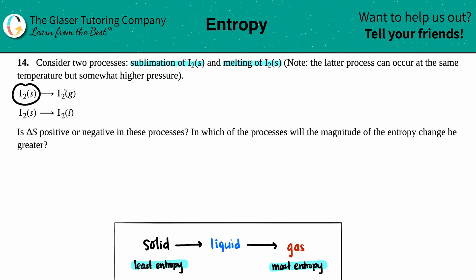Sublimation is when you're turning your I₂ solid into a gas. And then the bottom one is solid to liquid—that's melting. So they're just writing out what they basically just said, but in a process, a balanced equation.